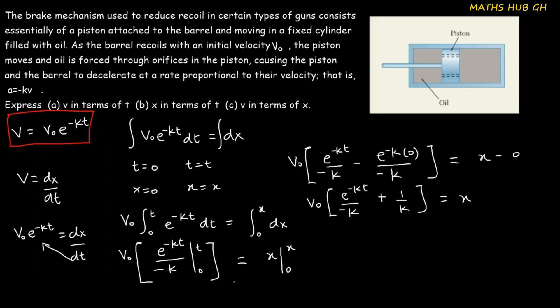Factoring, we get v-naught over minus k times (e to the power minus kt minus one) equals x, which we can write as x equals minus v-naught over k times (e to the power minus kt minus one). This is the answer for part (b), expressing x in terms of t.